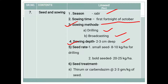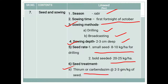Seed rate: for small seed, 8 to 10 kg per hectare, and for bold seed, 20 to 25 kg per hectare. Seed treatment: especially with fungicide, 3 grams per kilogram of seed is sufficient for the linseed crop.